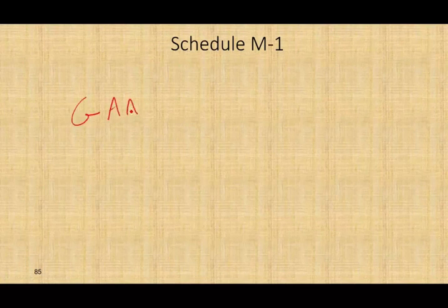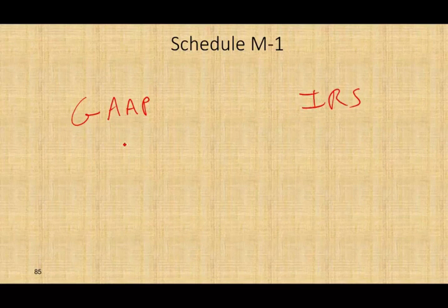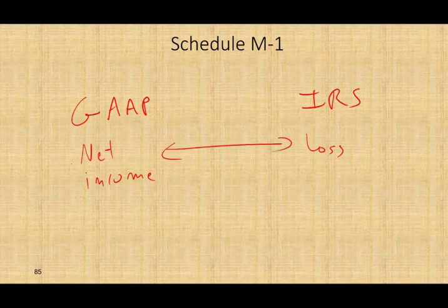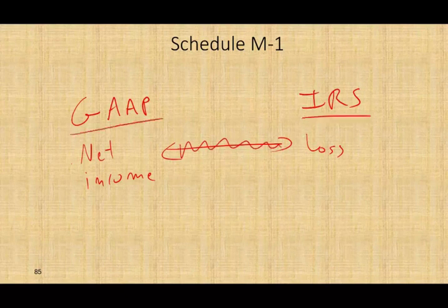So what is Schedule M1? What is the big idea? The big idea is this: the IRS wants to see the difference between your GAAP income and IRS income. They don't want to see too much income for GAAP and losses for IRS. They want to see what is the difference — the discrepancy between your GAAP and IRS net income — because that difference is what's making you not pay taxes to the IRS.